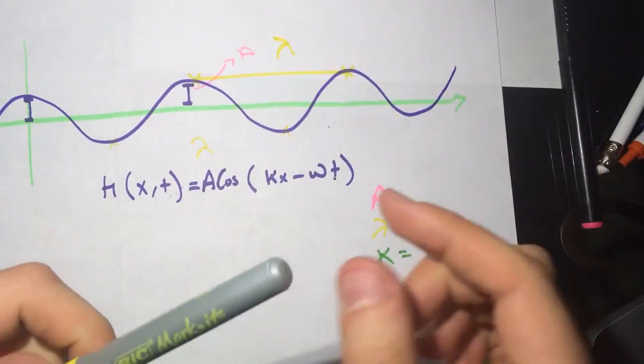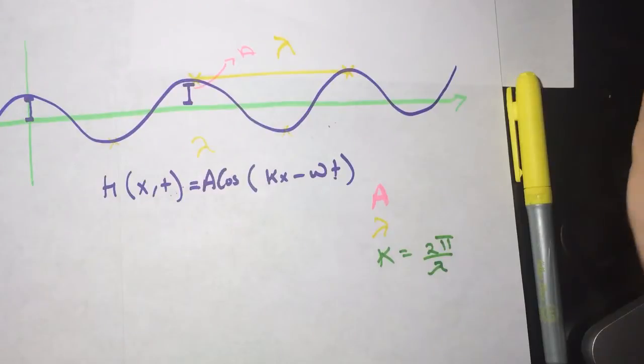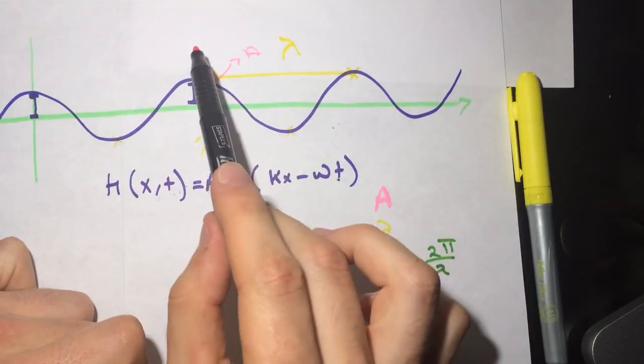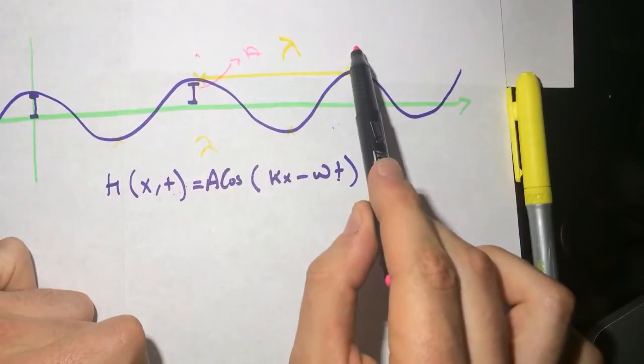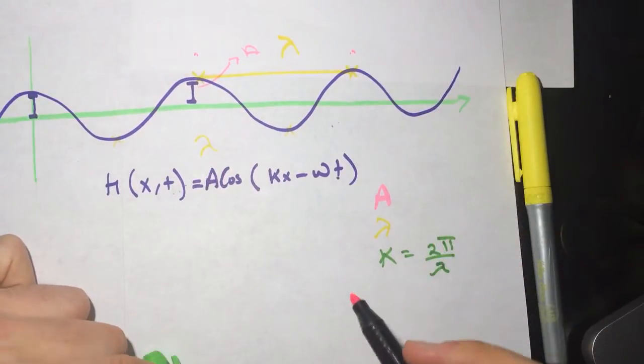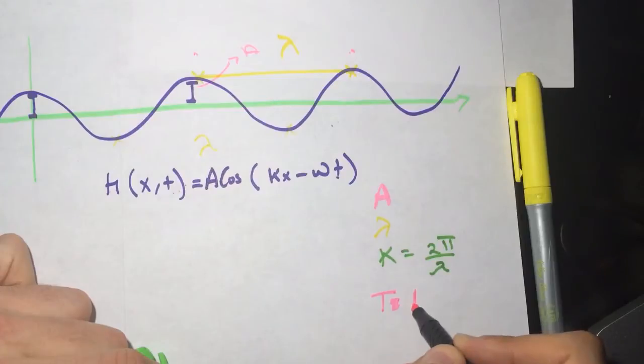And what else do we need? We have a period. The period is the time to go from here to here. This is the period. The period T is equal to one over frequency.